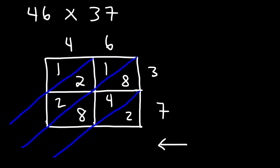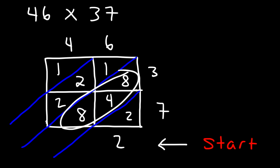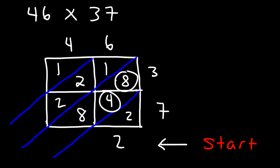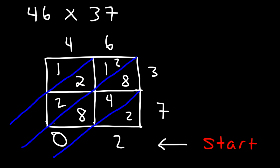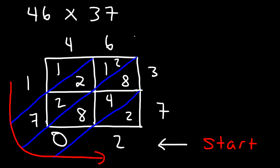4 times 7 is 28, write 2 and 8. Now start adding diagonals from the bottom-right. The first has only 2 — write that. Next: 8 plus 4 plus 8 is 20 — write the 0, carry the 2. Then 1 plus 2 is 3, plus 2 is 5, plus 2 is 7. The last diagonal has just 1. Reading in order, the answer is 1702 — one thousand seven hundred and two.